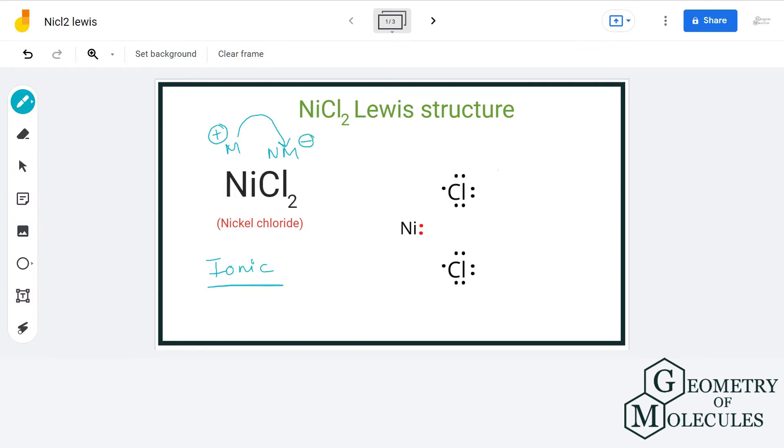So in this case, a nonmetal is chlorine that has 6 valence electron in its outermost shell and each chlorine atom will gain 1 electron from nickel.